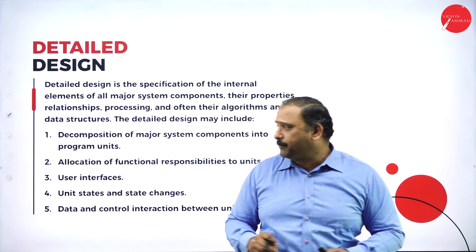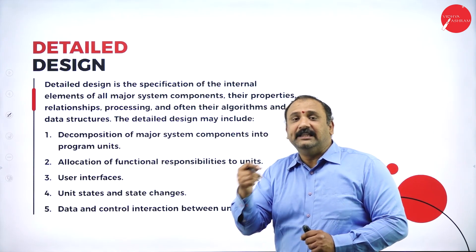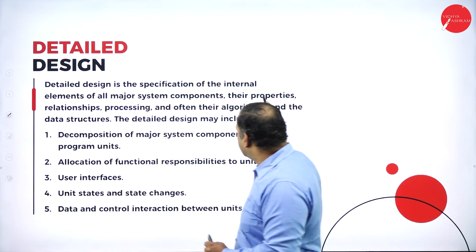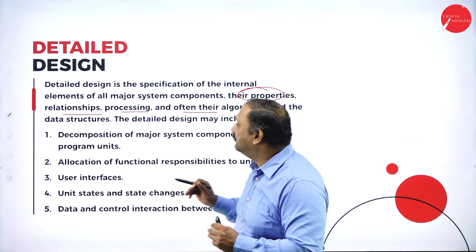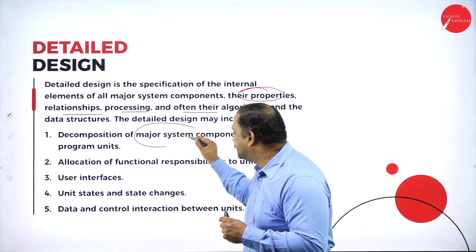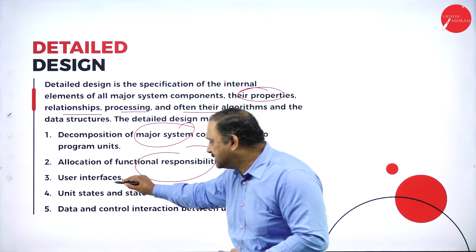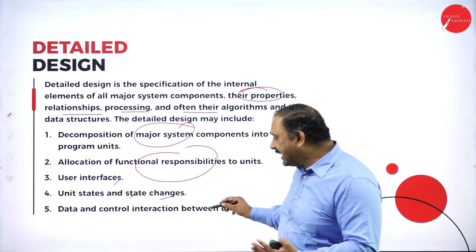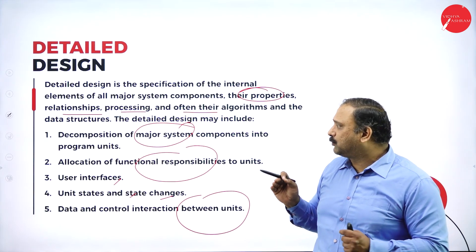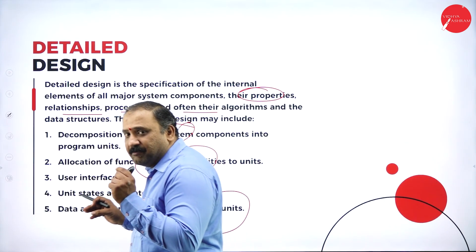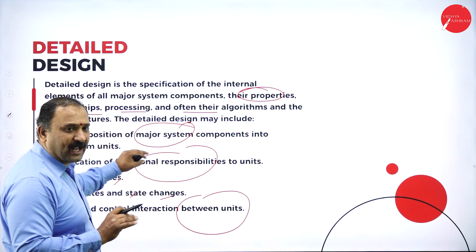Followed by detailed design. This talks about every single component involved in the process of making the model — their properties, relationships, processing, and the algorithms involved in data structures. This includes the decomposition of major system components, allocation of functional responsibility, the user interfaces, unit states and changes, and data and control interaction between the units. First, what are all the major components going to be involved? These will be designed into program units.